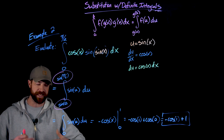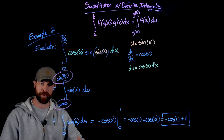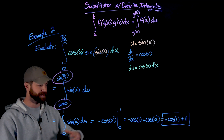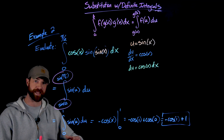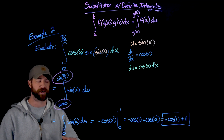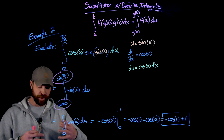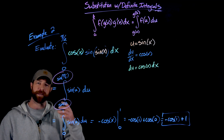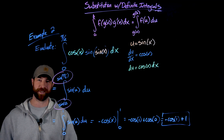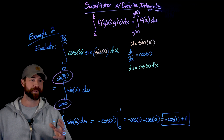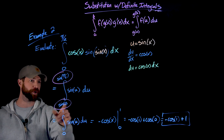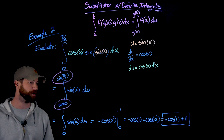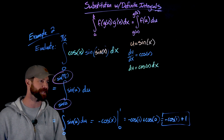This will trick you sometimes, especially when you're deep into a problem — like computing volumes of solids of revolution — and you want to make a u-substitution. Sometimes you'll forget to make this final bound substitution. The important thing is to do all your substitution work and make sure you change the bounds. Everything else, all the evaluation, is the same as always.